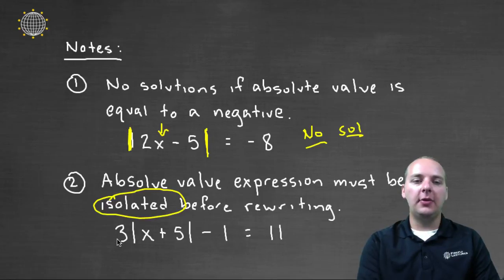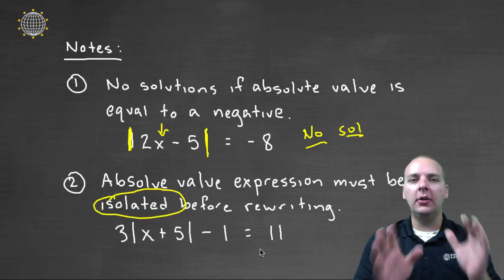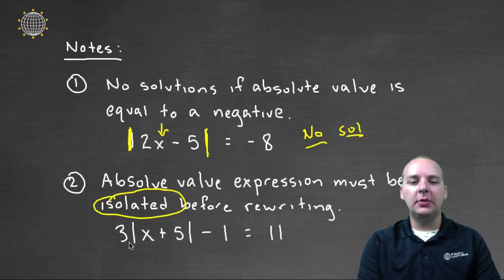So here in this example, we have 3 times the absolute value of x plus 5 minus 1 equals 11. Well, we're not going to set anything equal to 11 and negative 11. We're not going to do all that because this absolute value expression right here is not isolated.